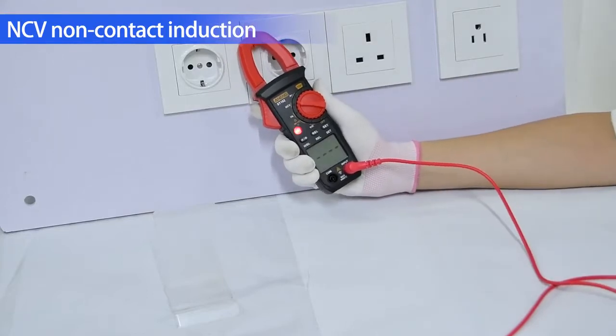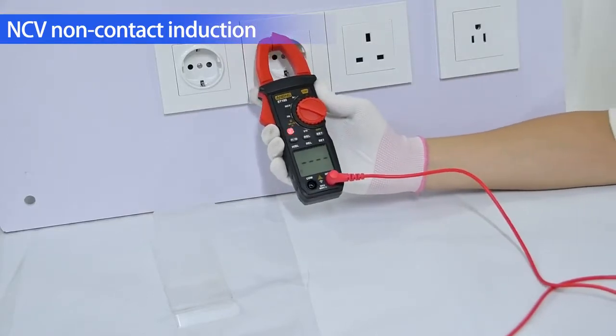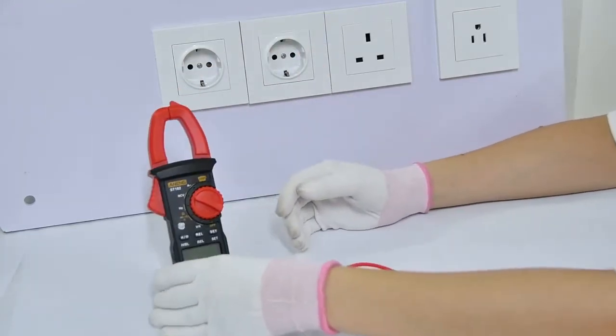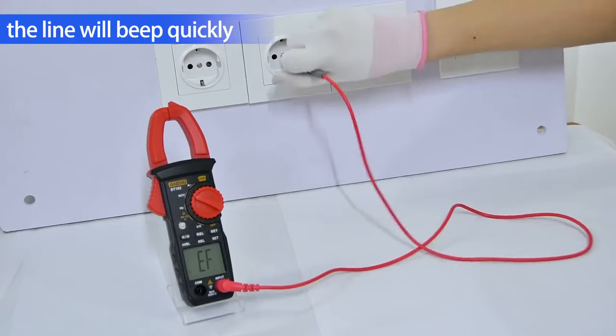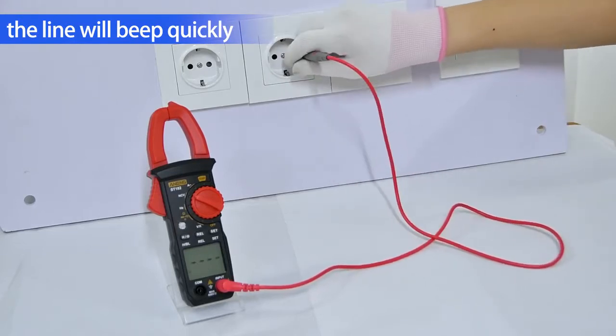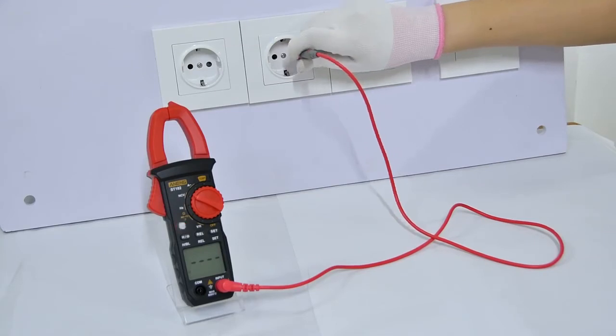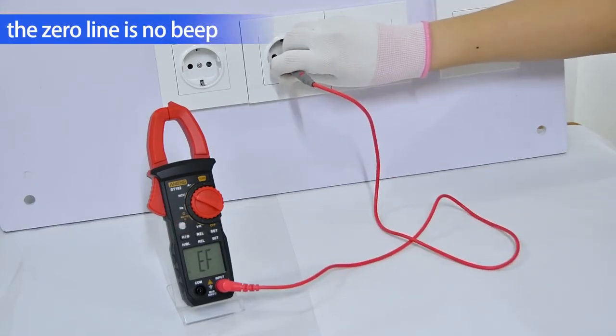NCV non-contact induction - the sensor detects when voltage is present. To recognize the zero line, use a single test wire to detect. The line will beep quickly and the zero line screen displays.